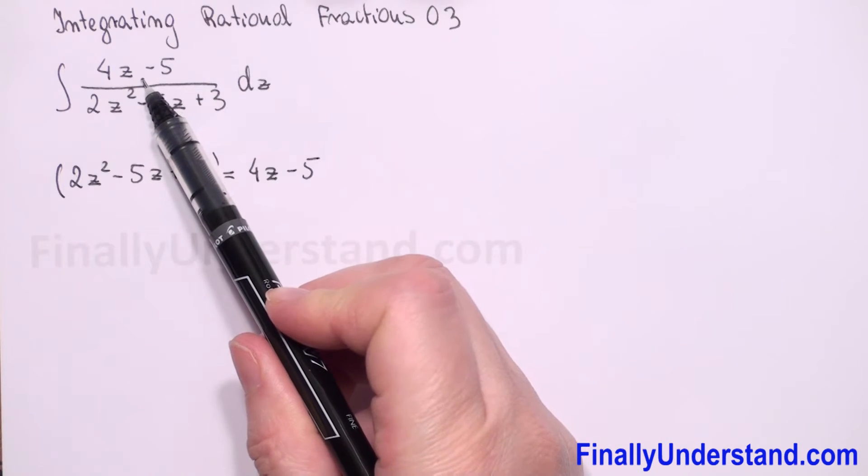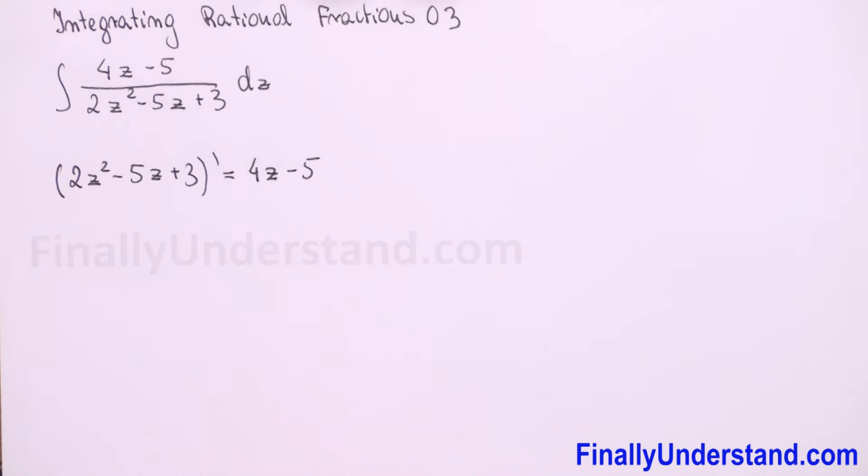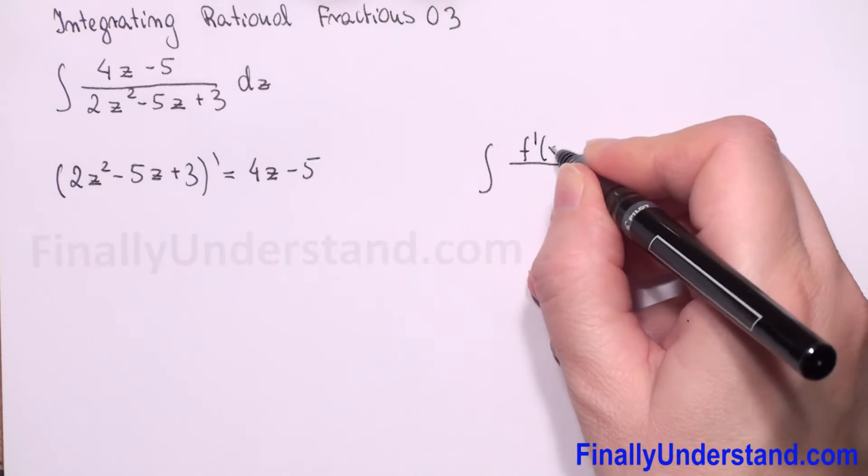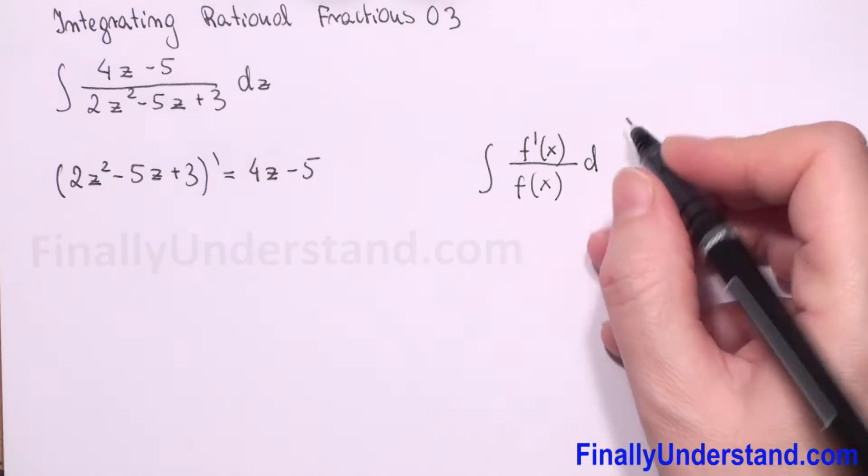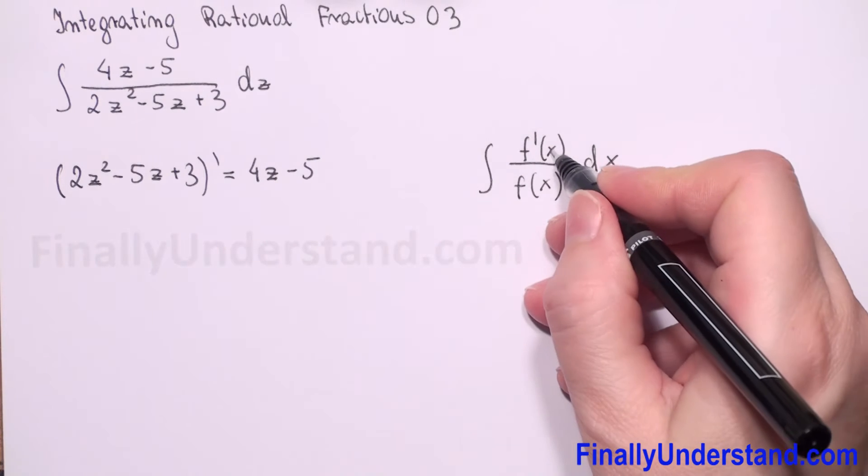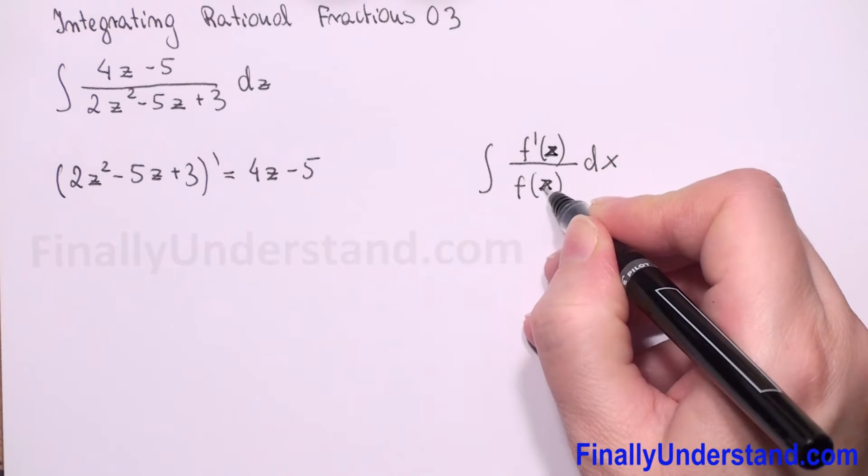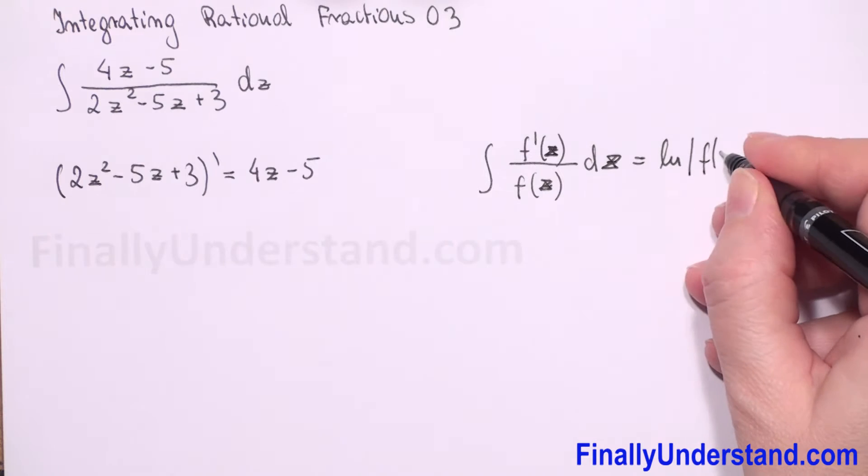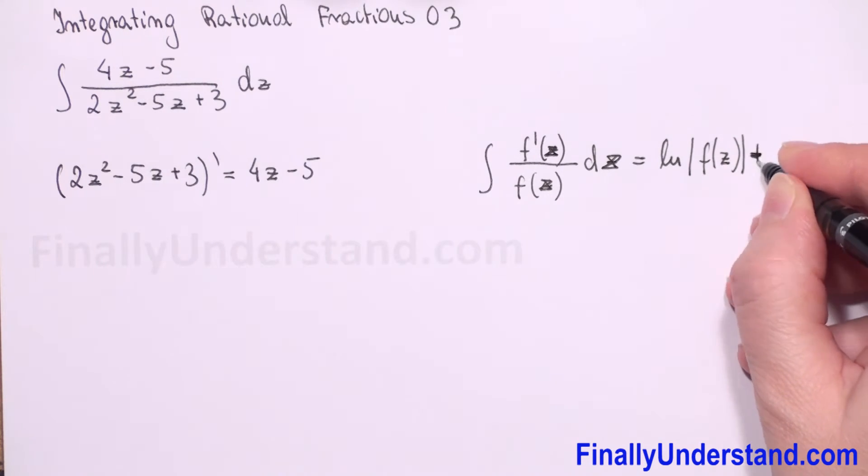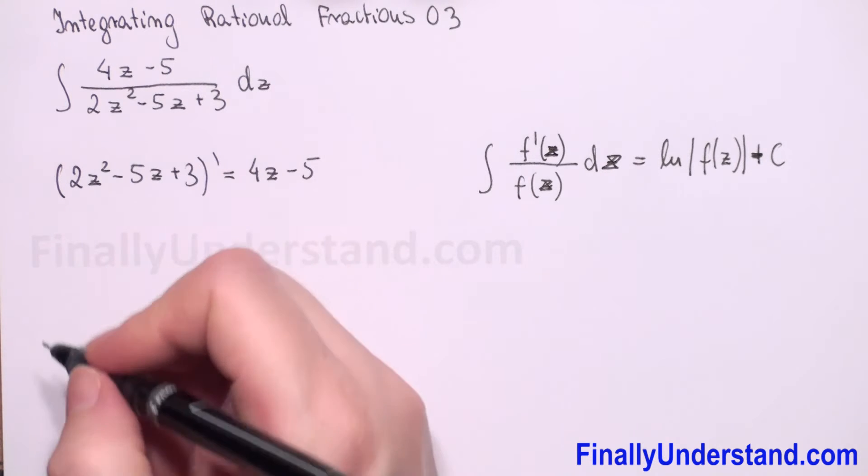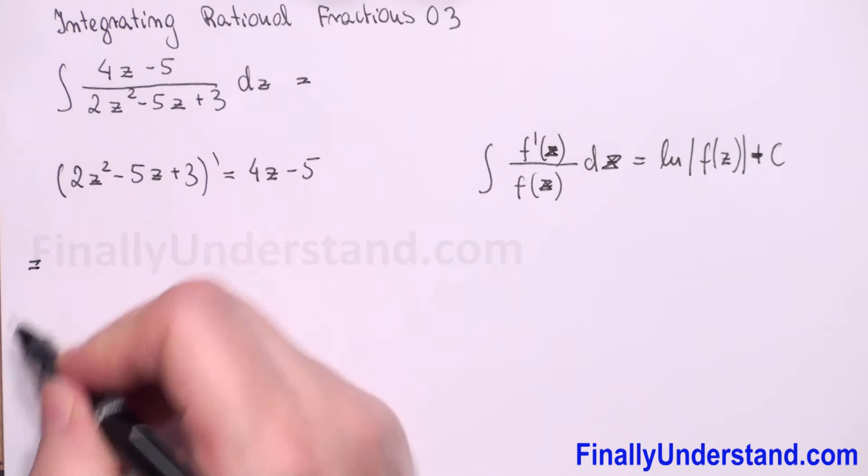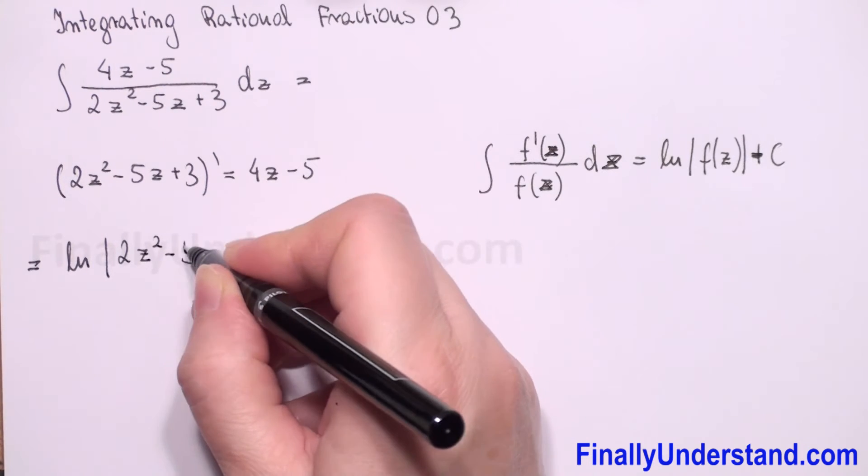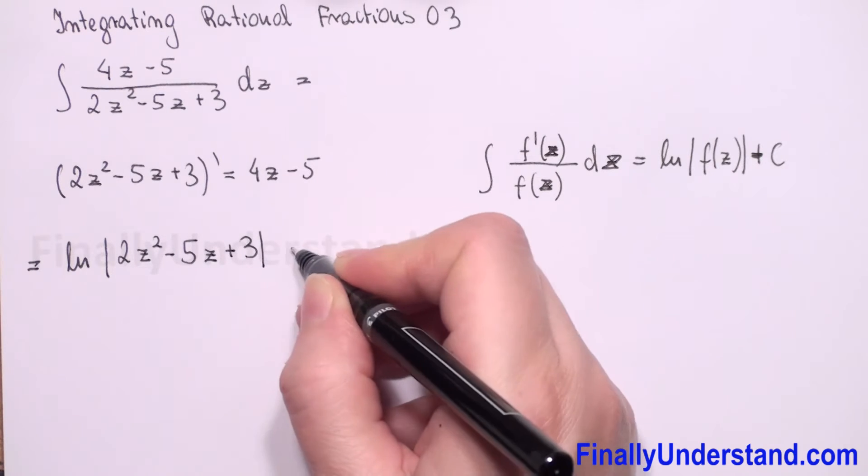So we have in numerator derivative of denominator. So we can use formula integral of, when we have in numerator derivative of denominator with respect to z. This is equal natural logarithm of absolute value of f of z plus constant c. So our integral will be equal natural logarithm of absolute value of 2z squared minus 5z plus 3 plus constant.